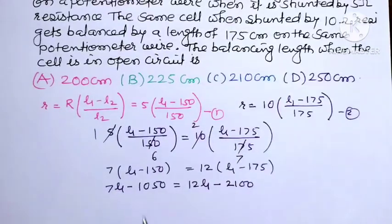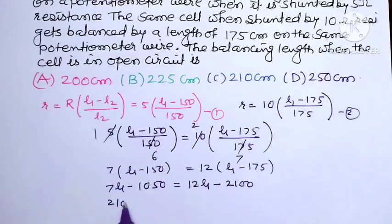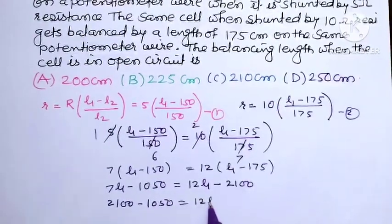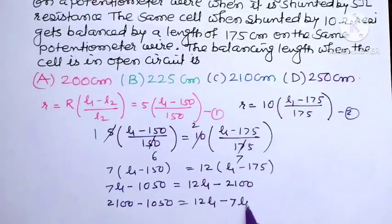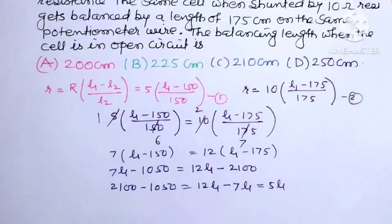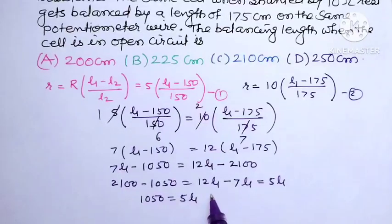Now 7L1, take this to the right hand side and 2100 to the left hand side. So minus 2100 becomes 2100 plus minus 1050 equals 12L1, and when 7L1 will be taken to this side it becomes minus 7L1. So 12 minus 7 is 5L1, and 2100 minus 1050 is 1050 equals 5L1.